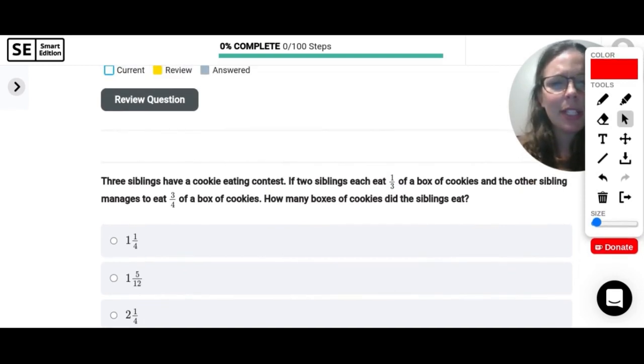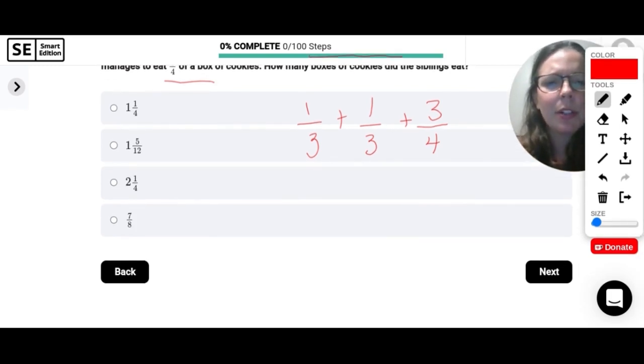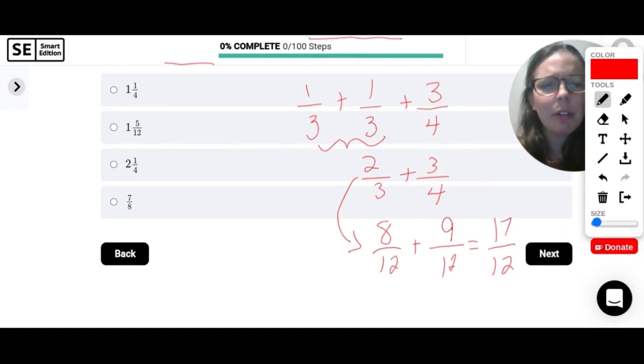Three siblings have a cookie eating contest. If two siblings each eat one third of a box of cookies and the other sibling manages to eat three fourths of a box of cookies. So two siblings eat one third each and then the other one eats three fourths. How many boxes of cookies did the siblings eat? So I need to do one third plus one third. Each of the two siblings did that and then add the three fourths to that. So in order to add these fractions, we need a common denominator. So it might actually be easier just to combine these since those are already the same. And now three and four, we could use a denominator of 12. Three times four is 12. So two times four is eight. And that's how we convert this one. And then four times three is 12. So three times three is nine. So add these together and you will get 17 twelfths. But we need our answer as a mixed number. So 12 goes into 17 once with five left over. So one and five twelfths.